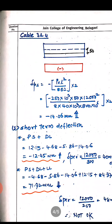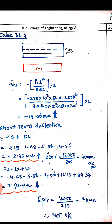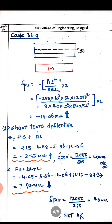For the second case — pre-stress plus dead load plus live load — we add: −4.68 (cable 1) − 5.86 (cable 2) − 14.06 (cables 3 & 4) + 12.15 (dead load) + 84.37 (live load) = +71.92 mm (downward). When live load is applied, the net deflection becomes downward.